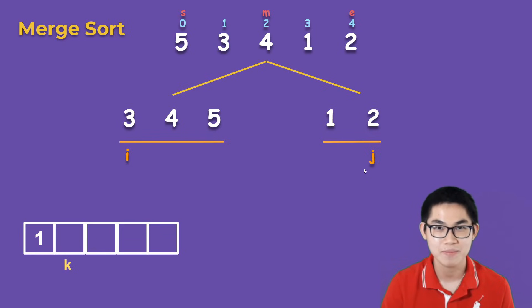Now once j goes outside of its line, we simply copy whatever i has into this array. So i has 3, we copy it into the temporary array.